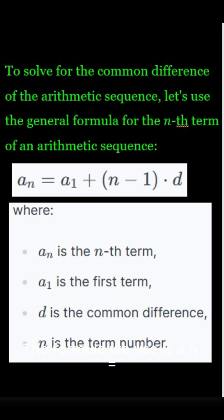The formula we use is a_n = a_1 + (n-1)d. Here, a_n is the term you're looking for, a_1 is the very first term in the sequence, and n is the term's position.